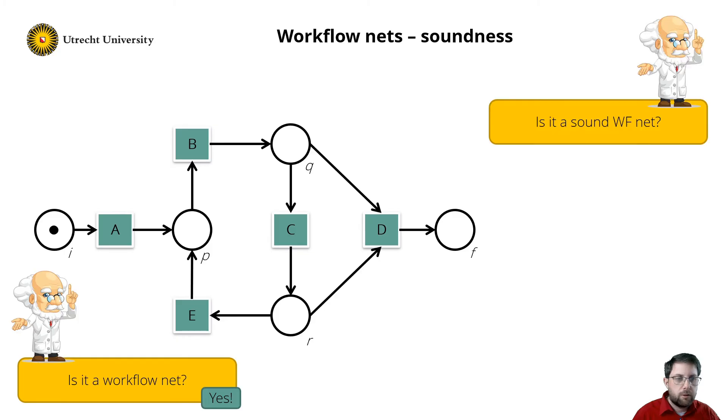Is it also sound? For this I played a token game. So transition a is enabled. It fires, which results in a token in place b. Now transition b is enabled, which produces a token in place q. And now c is enabled. I know that I can continue this game, but I can never get a token in both q and r, hence transition d is never enabled, and thus the workflow net is not sound.